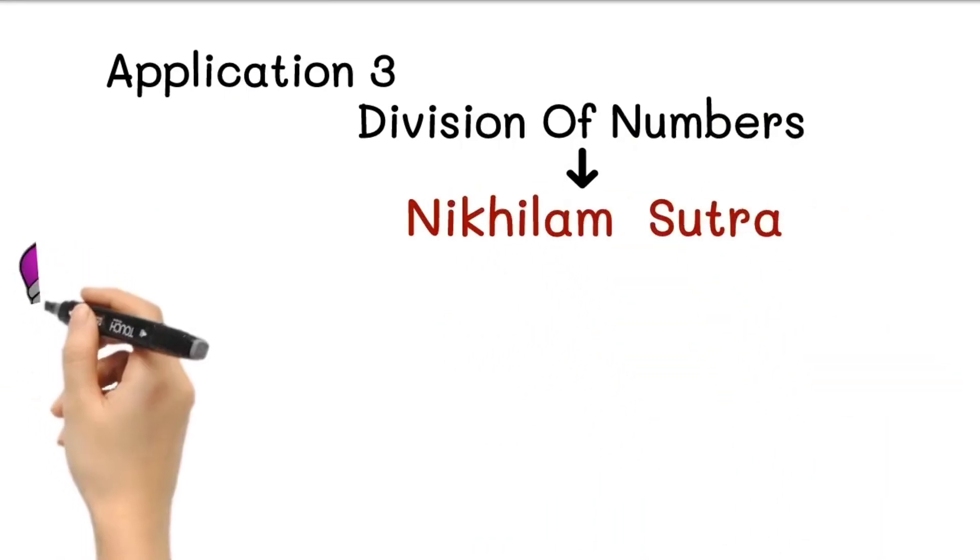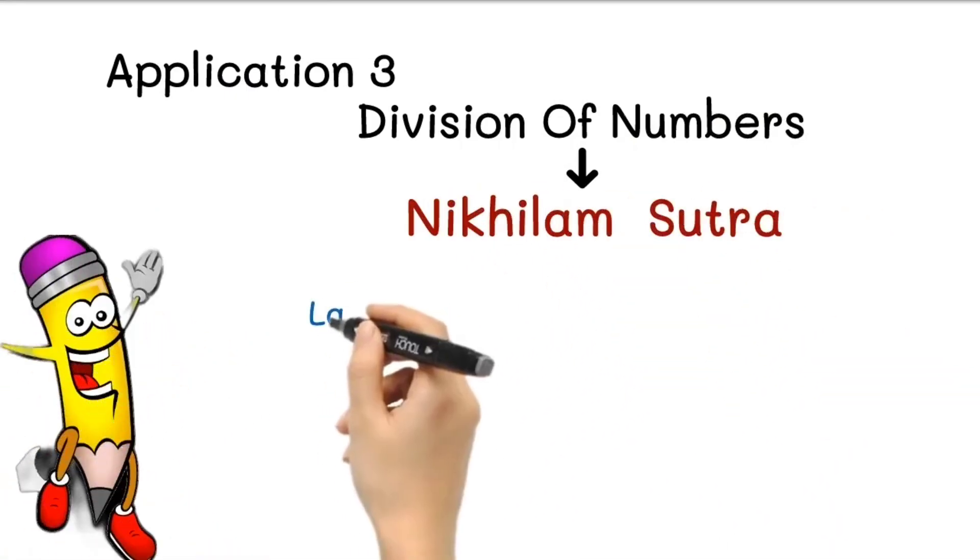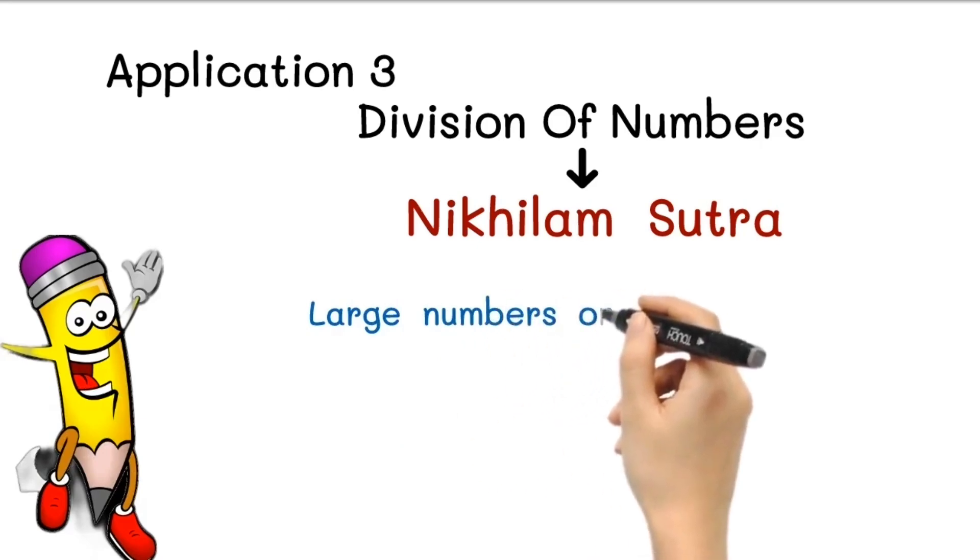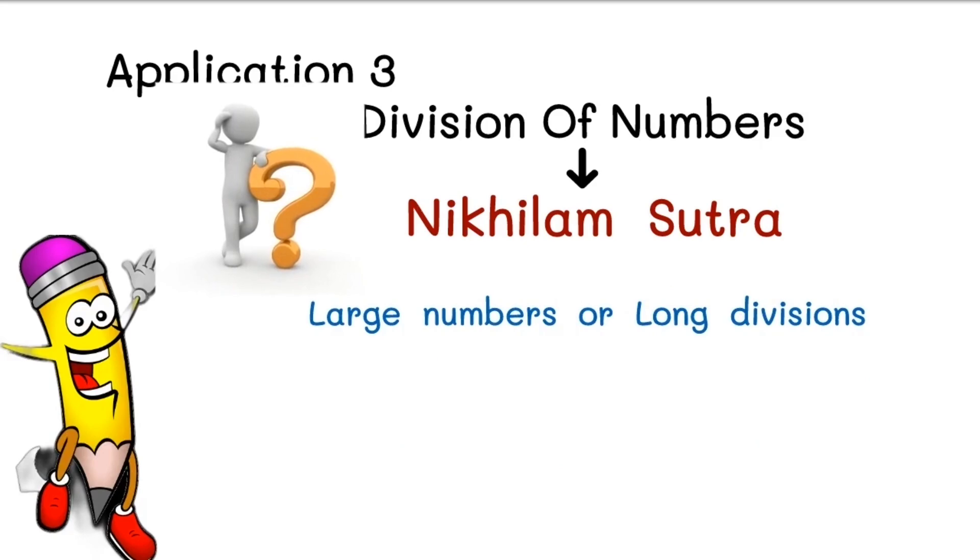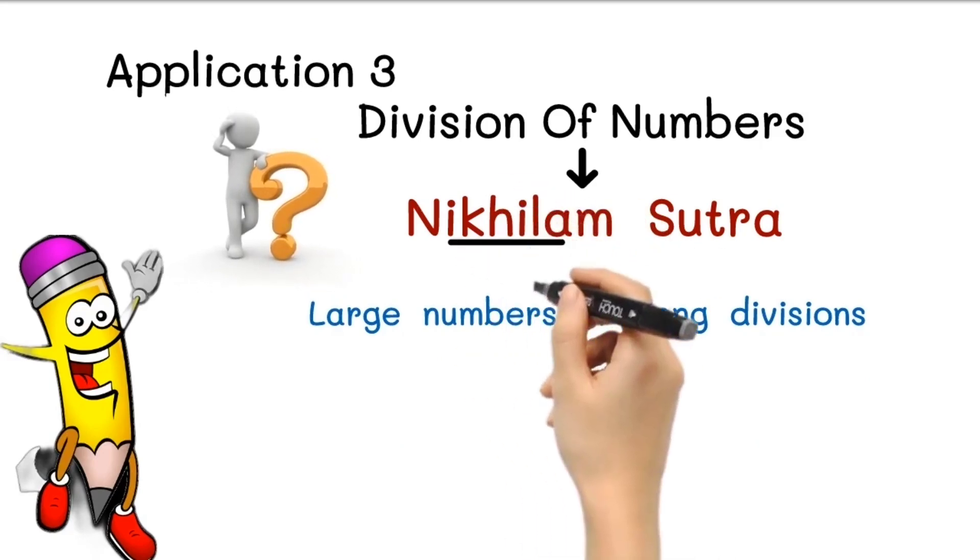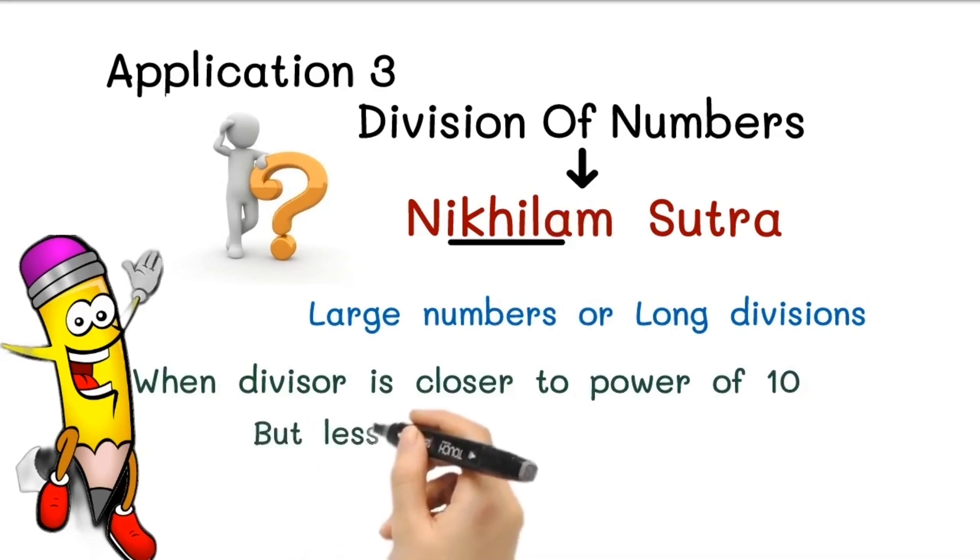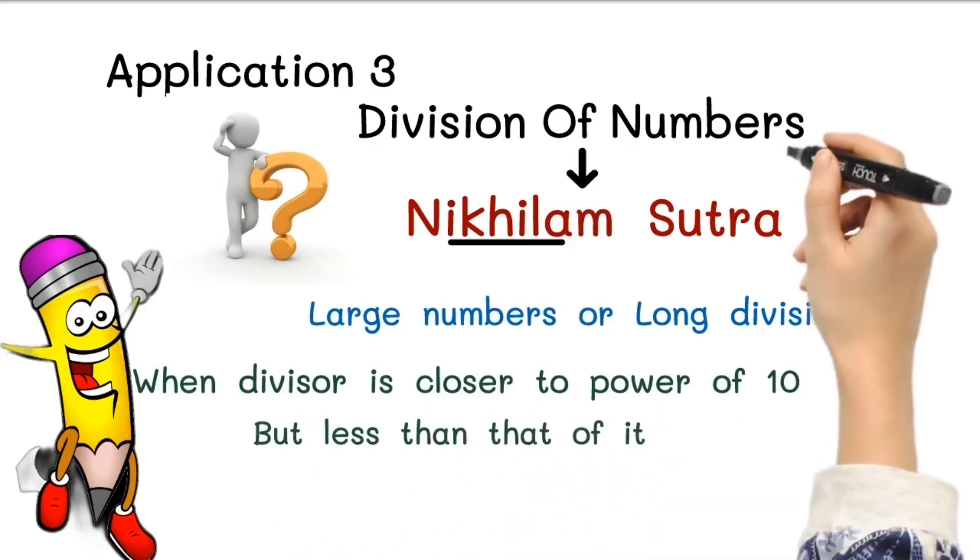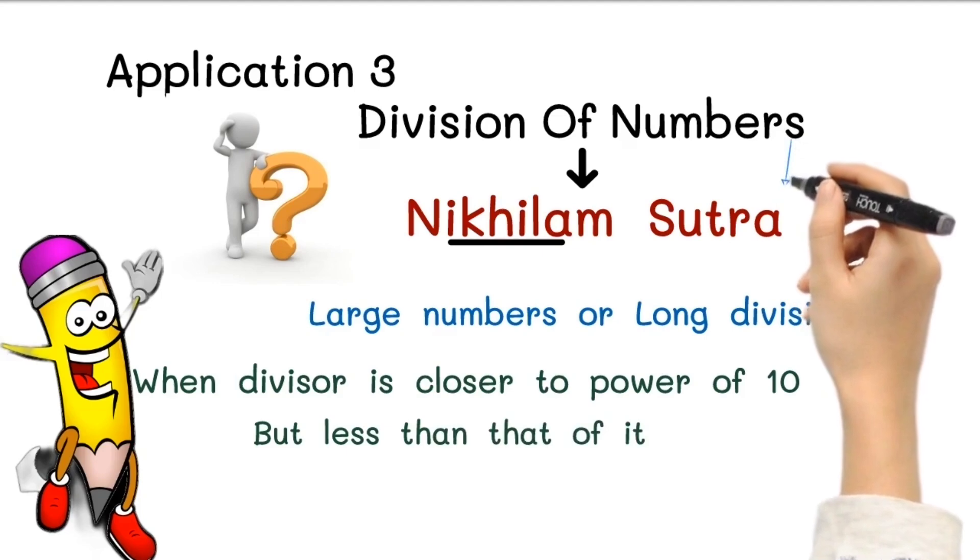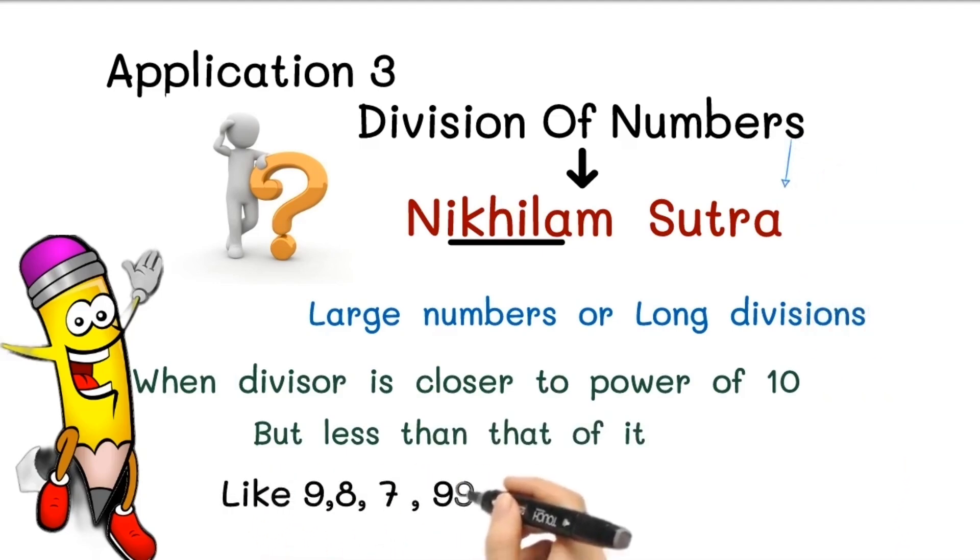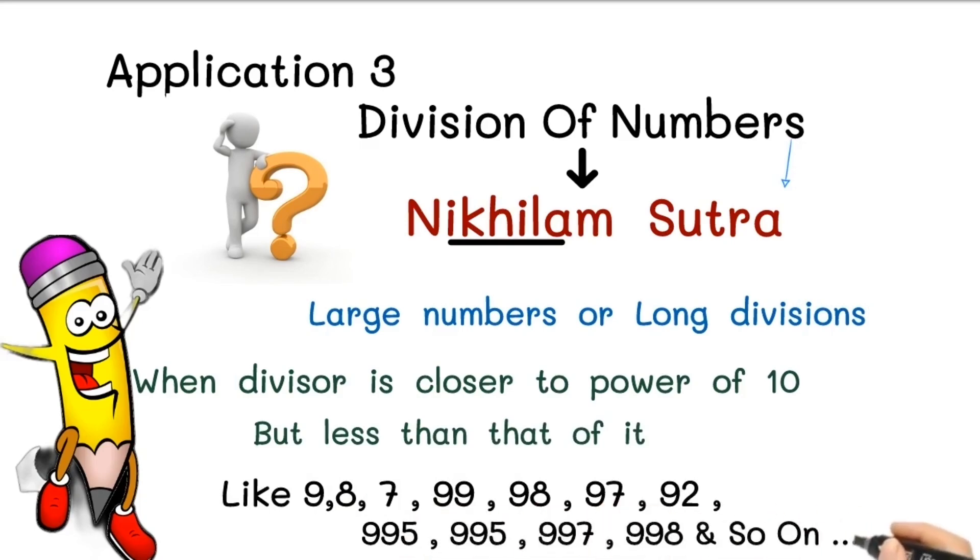The division by Nikhilam Sutra is a fantastic technique that streamlines the division process, particularly when we are dealing with large numbers or long divisions. Let me show you how it works. This method can be applied when the divisor is closer to the power of 10 but less than it. Using Nikhilam Sutra, we can easily divide when the divisor is like 9, 8, 7, 99, 98, 97, 92, 995, 997, 998, and so on.